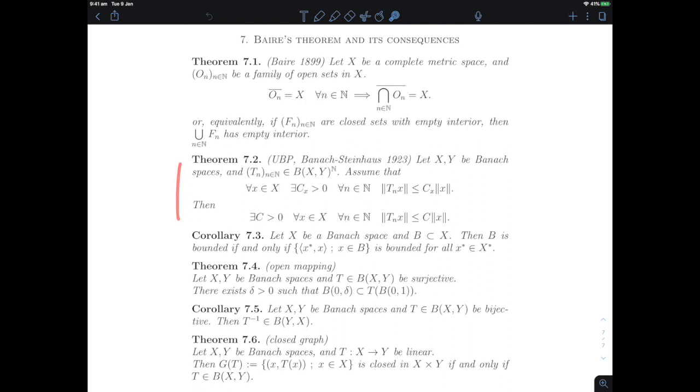We'll see the uniform boundedness principle: when you have a family of linear operators that are uniformly bounded pointwise, then they're uniformly bounded in the stronger uniform norm topology. When you have a set that is weakly bounded then it's automatically strongly bounded.